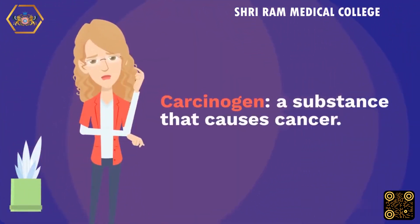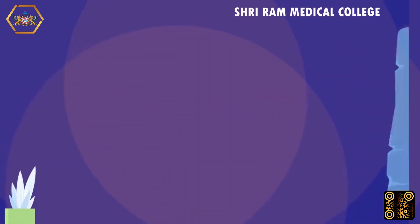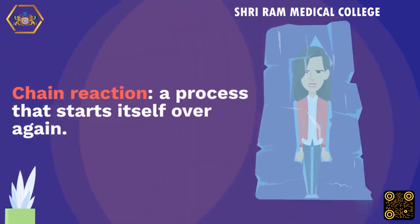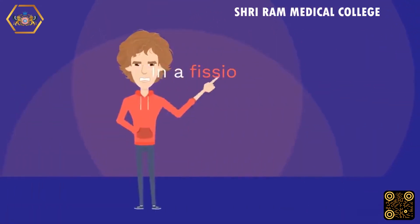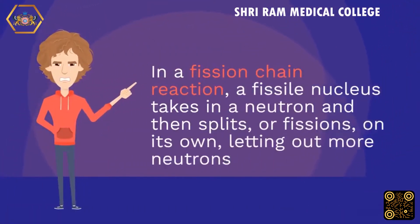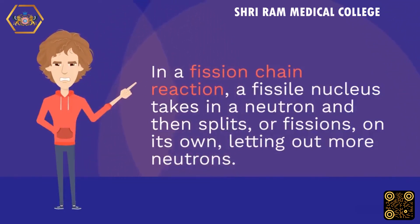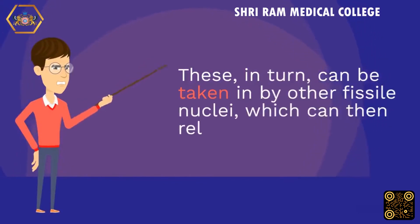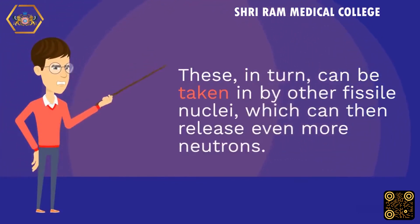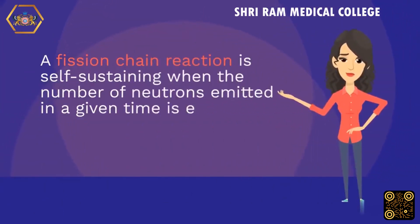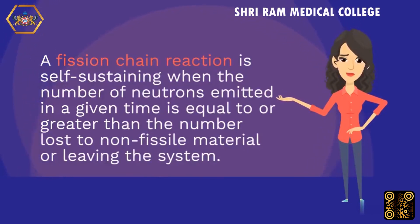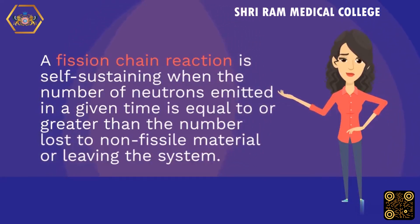Carcinogen: a substance that causes cancer. Chain reaction: a process that starts itself over again. In a fission chain reaction, a fissile nucleus takes in a neutron and then splits, or fissions, on its own, letting out more neutrons. These, in turn, can be taken in by other fissile nuclei, which can then release even more neutrons. A fission chain reaction is self-sustaining when the number of neutrons emitted in a given time is equal to or greater than the number lost to non-fissile material or leaving the system.